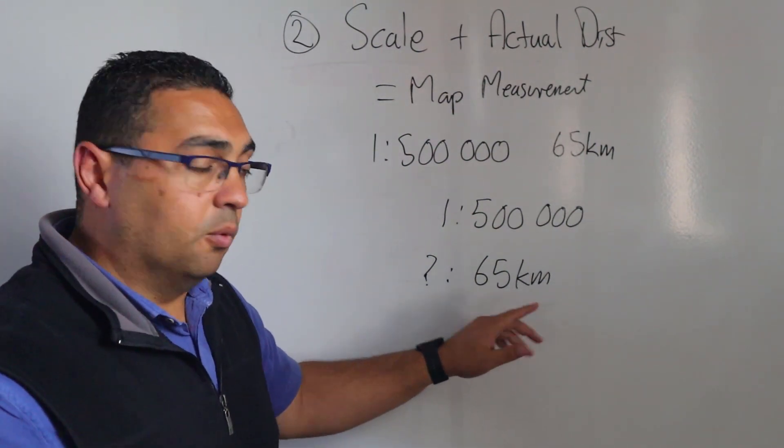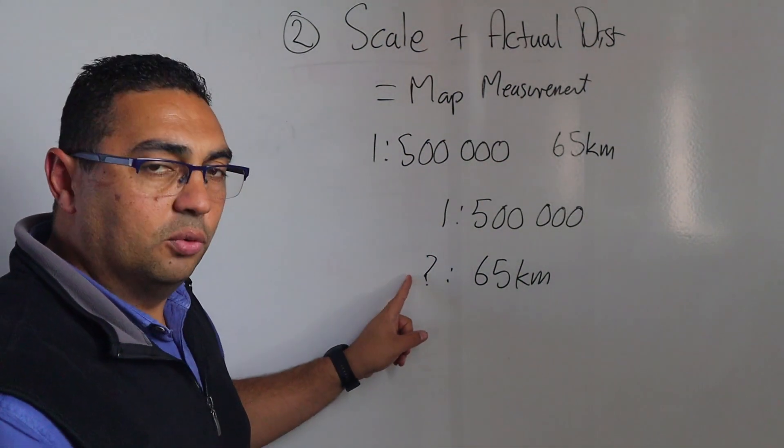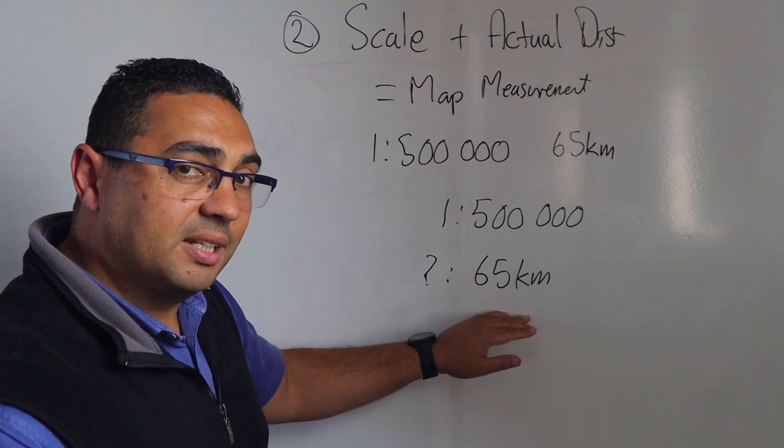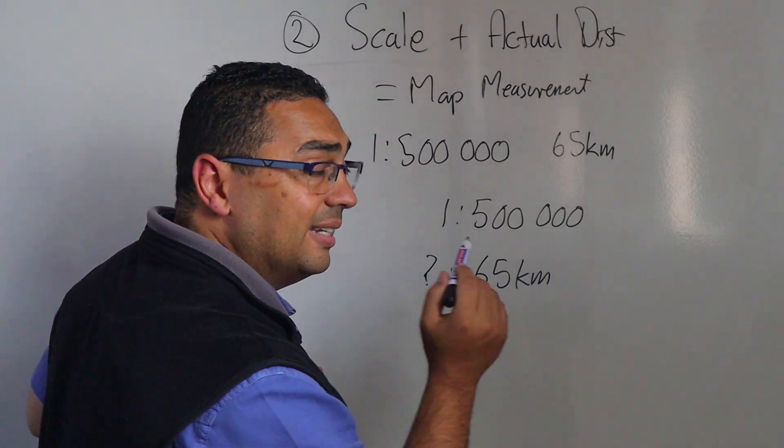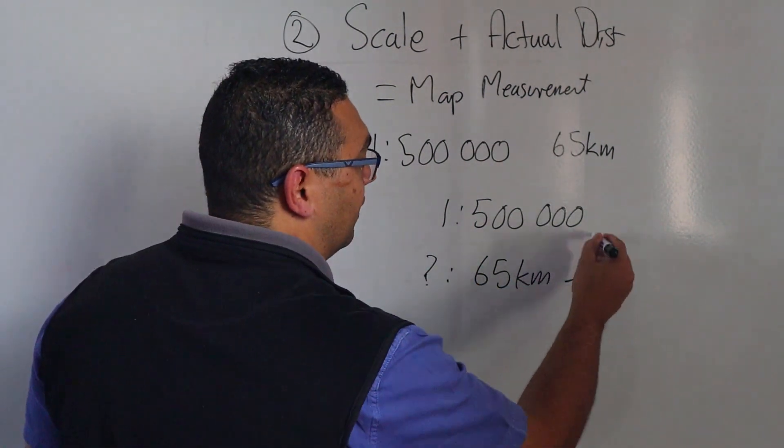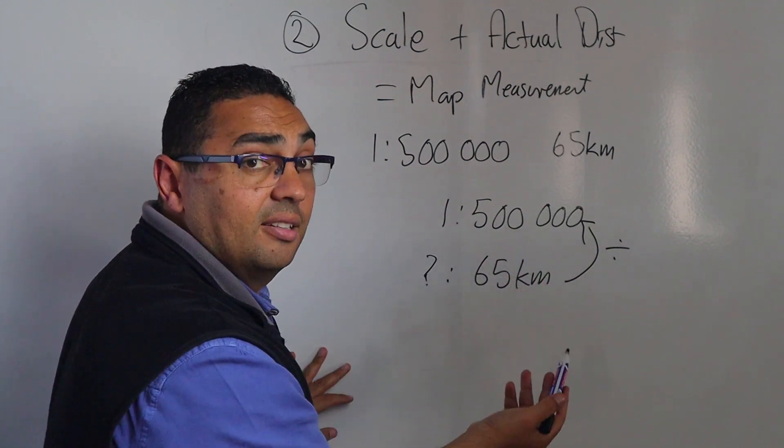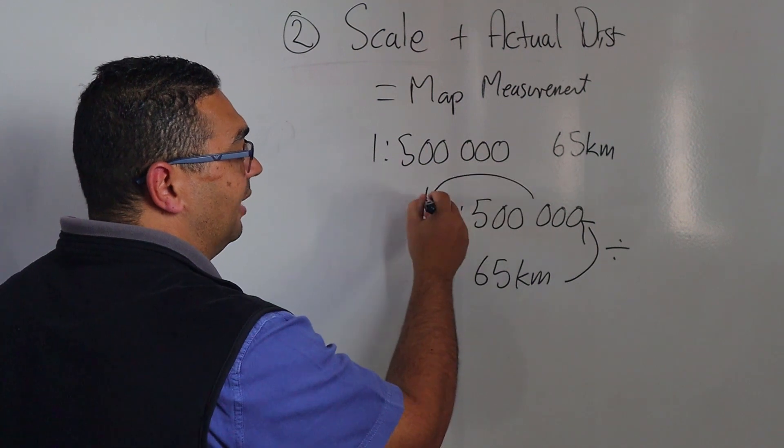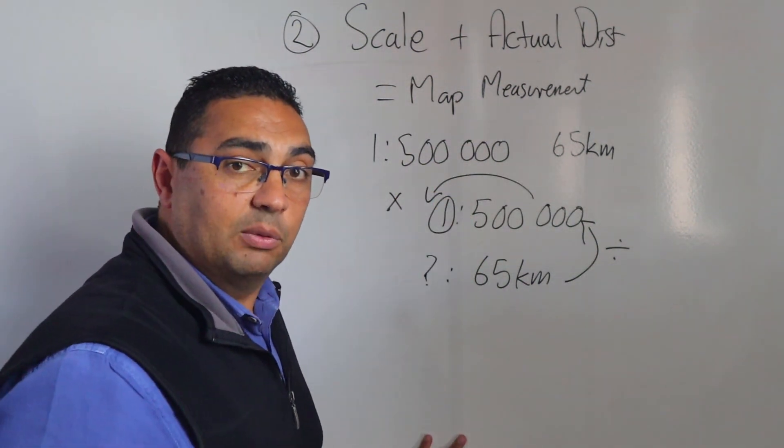Now what did I do previously? I asked well how did I get from there to the map measurement I had here? Because I've got my actual distance I'm going to work backwards, and what I'm going to do is I'm going to take my 65 kilometers and I'm going to divide it into whatever my ratio, my scale is. So that is the 500,000, and then I'm going to multiply that by whatever that scale is out of.